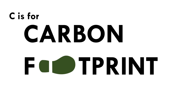C is for carbon footprint — the total amount of greenhouse gas emissions, primarily carbon dioxide, released into the atmosphere as a result of human activities. Carbon footprints are calculated for various entities such as individuals, organizations, products, or events. By identifying emission sources and quantifying their impact, individuals and organizations can take steps to reduce their carbon footprints through energy efficiency, renewable energy adoption, sustainable transportation, and waste reduction. Measuring and reducing carbon footprints not only helps combat climate change but also offers economic and reputational benefits, demonstrating a commitment to sustainability.